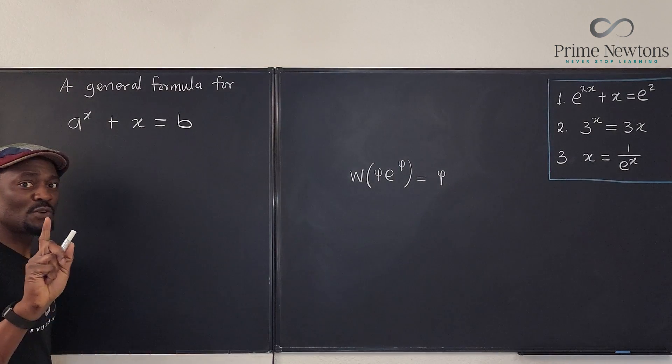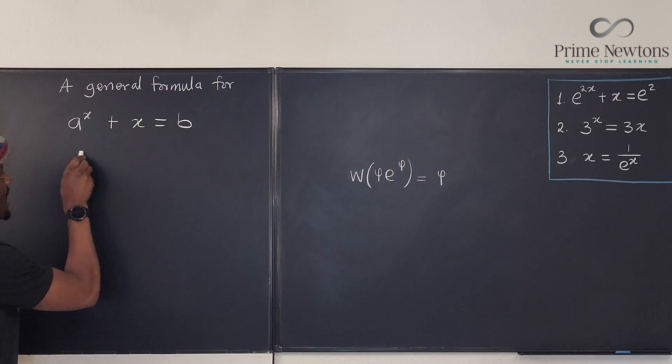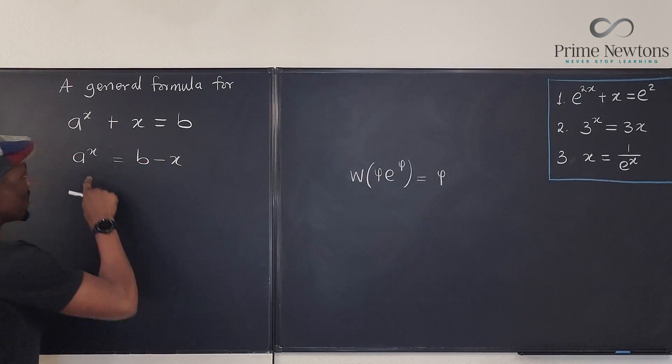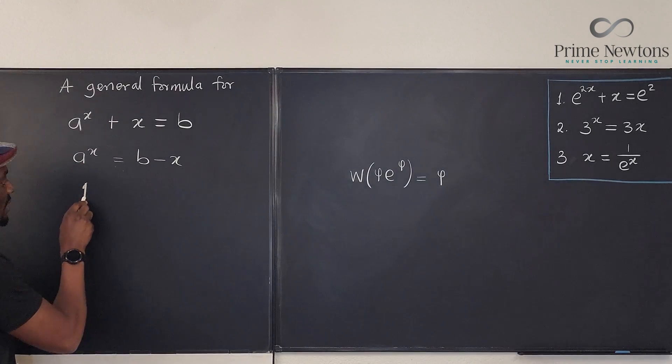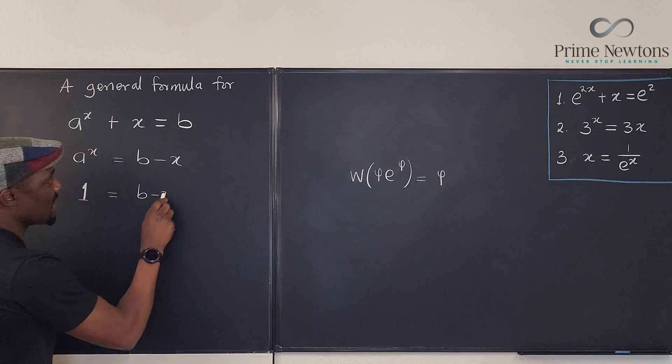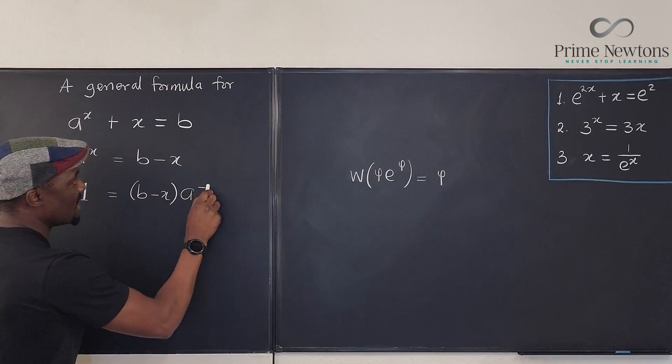So what I'm going to do first is isolate this. So I'm going to say a to the x will be equal to b minus x. Then I'm going to divide both sides by this. If I divide this by this, I'm going to get one on this side. And if I divide this by this, it's just going to be b minus x divided by this, which is the same thing as a to the negative x.